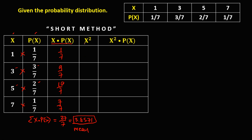For the x² column, just take the square of each x value. The square of 1 is 1 times 1, which is 1. The square of 3 is 3 times 3, which is 9. The square of 5 is 5 times 5, which is 25. And the square of 7 is 7 times 7, which is 49.